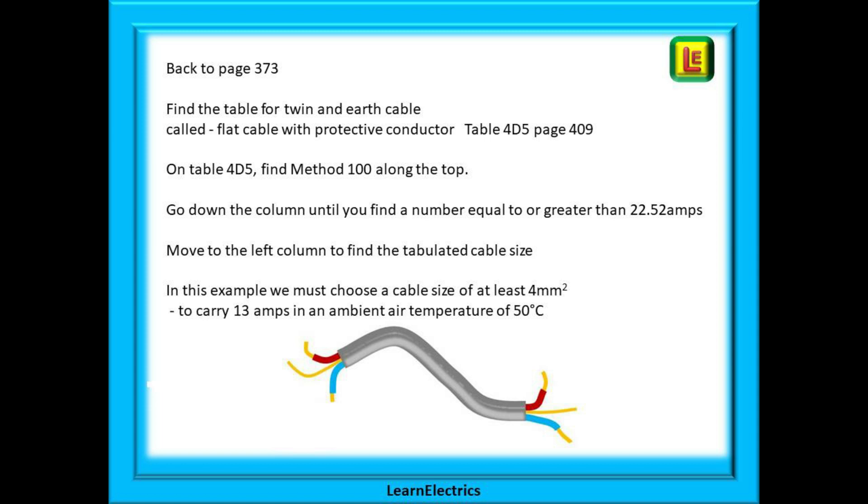On table 4D5 find method 100 along the top. Go down that column until you find a number equal to or greater than 22.52 amps which is 27 amps. Now move to the left most column to find the tabulated cable size. In this example we must choose a cable size of at least 4 millimeters to carry 13 amps in an ambient air temperature of 50 degrees centigrade.